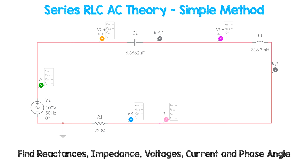Welcome to this video on series RLC AC theory using a simple method. We're going to find reactances, impedance, voltages, the current, and the phase angle. This is a simple method because it's easy and quick to do. In another video I'm going to show you how to do the same using complex numbers in rectangular form and complex numbers in polar form.